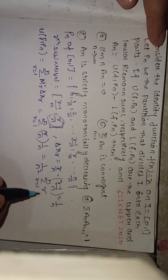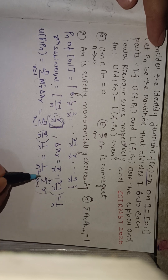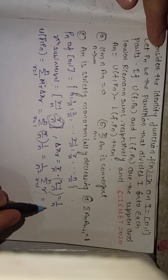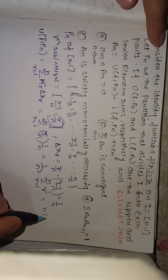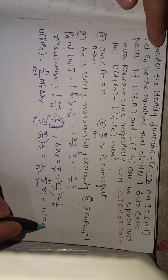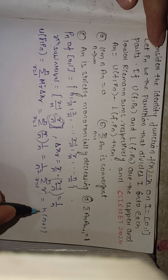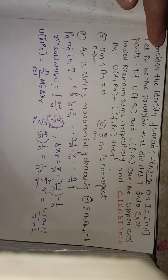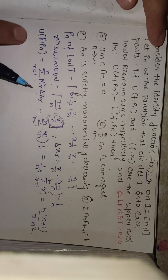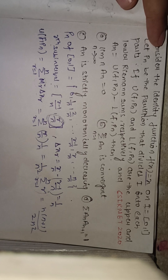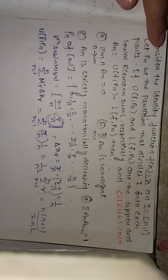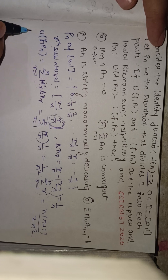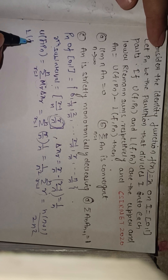This is the summation of the first n natural numbers, which equals n(n+1)/2. Therefore U(f,Pn) = n(n+1)/(2n²). Now we proceed to find the lower Riemann sum.